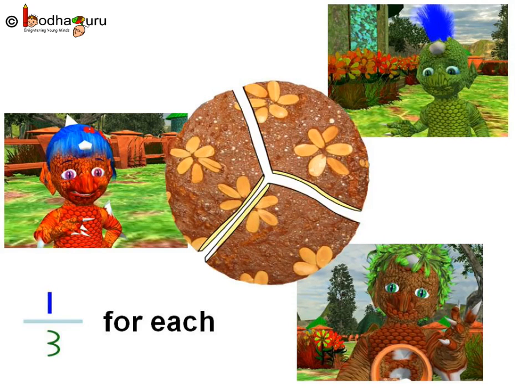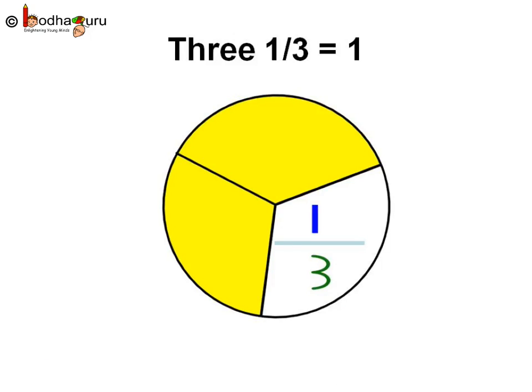This way, Chinu gets one third, Minu gets one third, and Motu also gets one third. All are happy. If we combine all the thirds, what do we get? We get the whole cake. Right, kids?